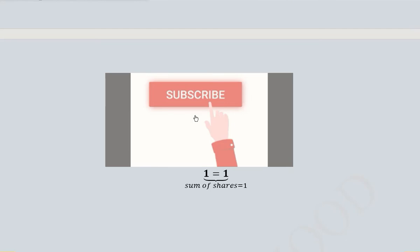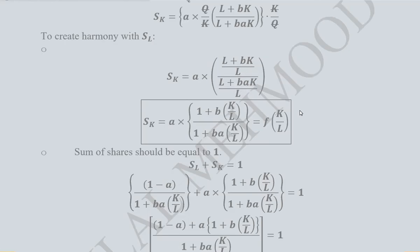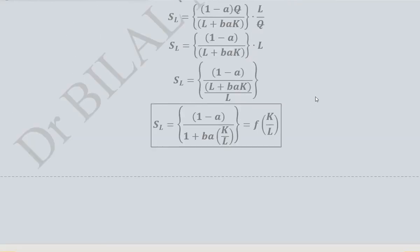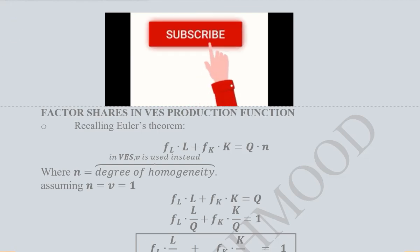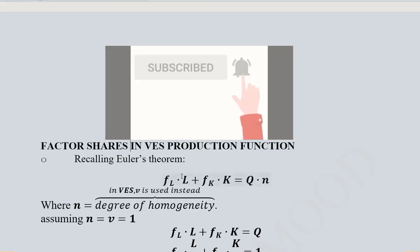In this way we have experimented and learned that the shares of capital and labor can be found in the case of VES production function. We get a production function with labor and capital contributing into it. Thank you.